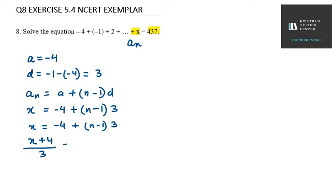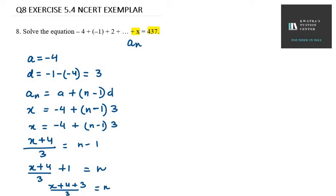Now taking minus 1 to the other side: (x plus 4) over 3 plus 1 equals n. Taking LCM gives (x plus 4 plus 3) over 3, so n equals (x plus 7) over 3. Now we have the value of n, and next we need to find the value of Sn.